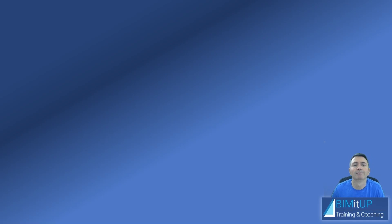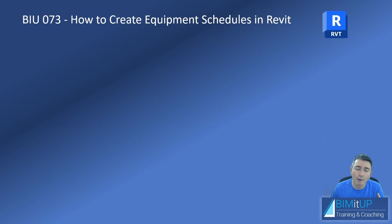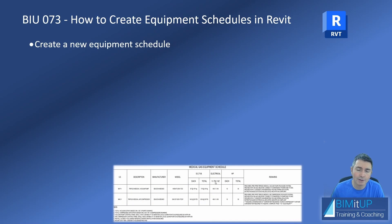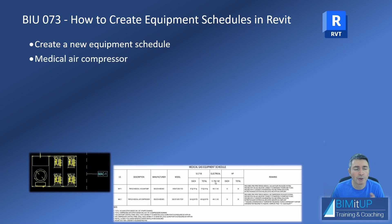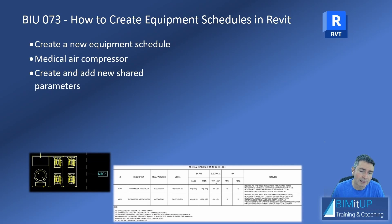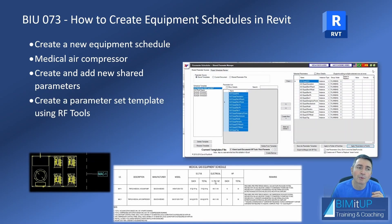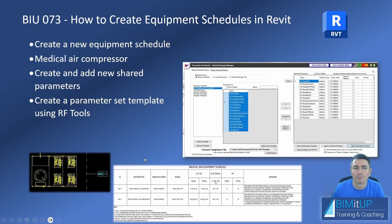Hello everyone, Alex Bemidup here. Today I'm going to show you how to create equipment schedules in Revit. This is going to be part one. We're going to start with a brand new equipment schedule from scratch, using a medical air compressor. I'm going to show you how to create shared parameters and how to add them to your equipment and schedules, and finally how to create a parameter set template using RF tools. Very powerful tool. See you in Revit.